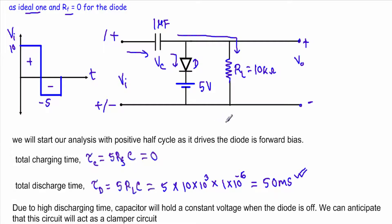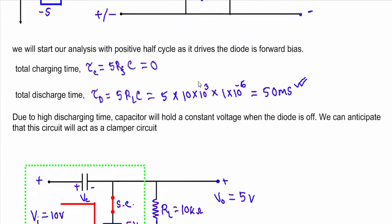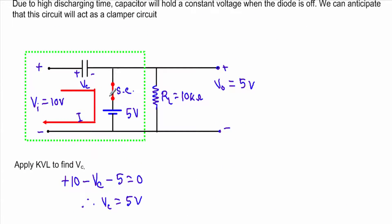I will start my analysis with the positive half cycle. During the positive half cycle this terminal is positive and this terminal is negative, therefore this diode is in forward bias. I will replace the diode with a short circuit, and a charging current ic will flow in this direction. When the diode gets shorted, we are taking the output voltage across the 5 volt constant DC voltage source, so as long as the input voltage is at positive half cycle, our output voltage will be 5 volt. Now I have to determine the value of the capacitor voltage by applying KVL in the clockwise direction.